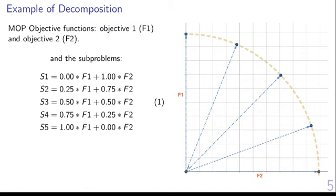Let's first take a look at how to create subproblem 1. Subproblem 1 is 0 multiplied by F1 plus 1 multiplied by F2. Subproblem 2 is 0.25 multiplied by F1 plus 0.75 multiplied by F2. And we create all other subproblems in a similar way.